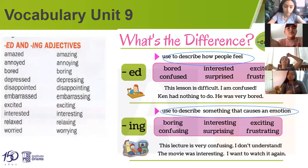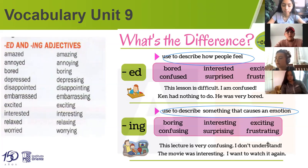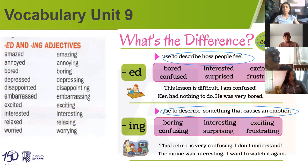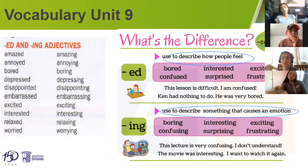The examples are: boring, confusing, interesting, surprising, exciting, frustrating. It's not the same to say 'bored' and 'boring' — not the same as 'excited' and 'exciting' — because 'exciting' refers to the object or thing, and 'excited' is the emotion you are feeling. Here is your full list: amazed/amazing, annoyed/annoying, bored/boring, depressed/depressing, disappointed/disappointing, embarrassed/embarrassing, excited/exciting, interested/interesting, relaxed/relaxing, worried/worrying.